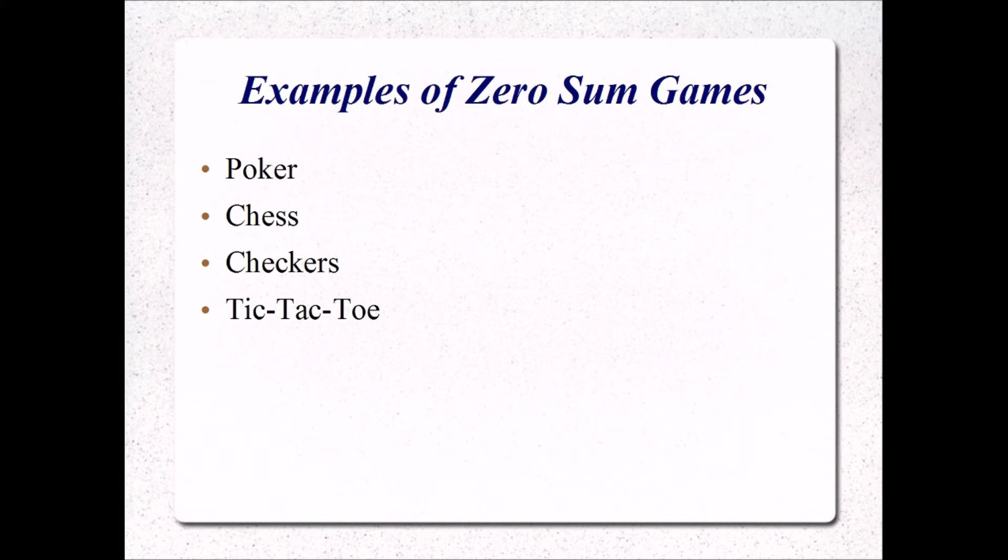And in tic-tac-toe, we have three possible outcomes. One player wins, X wins, O wins, or neither player wins. So all the utility goes to X, all the utility goes to O, or there is no utility distributed at all. In which case, there's zero utility to either player. But as we'll see, that might mean that they have actually minimized their losses, and that's sort of what the AI using the Minimax algorithm will attempt to do.